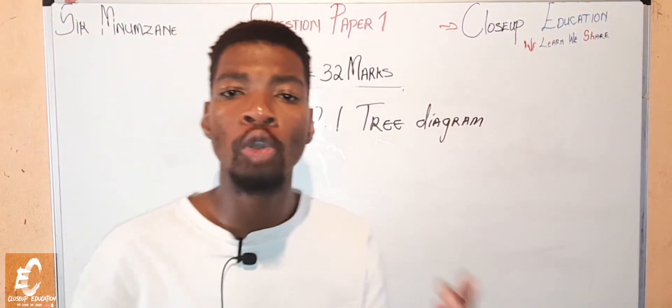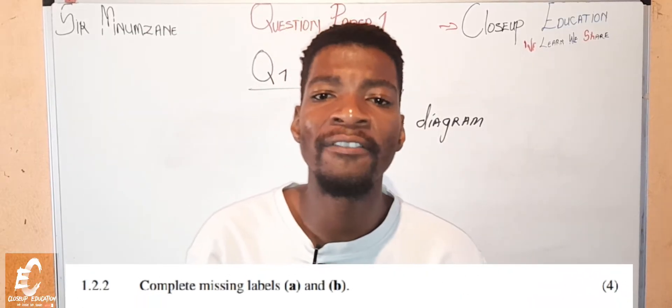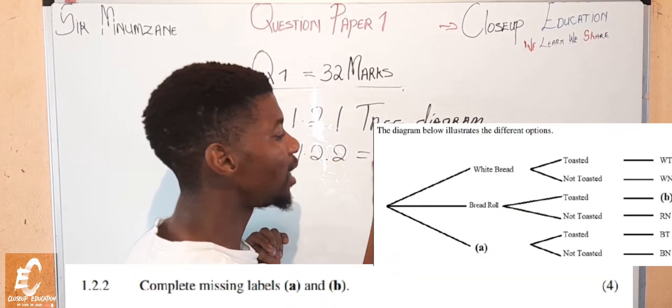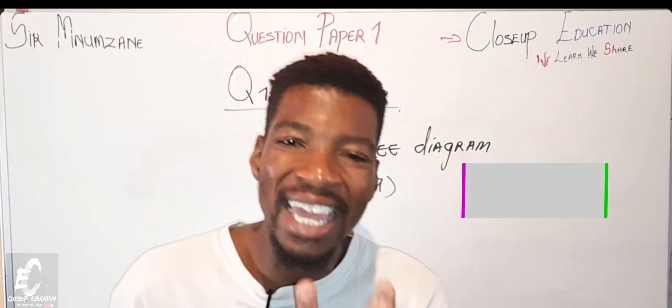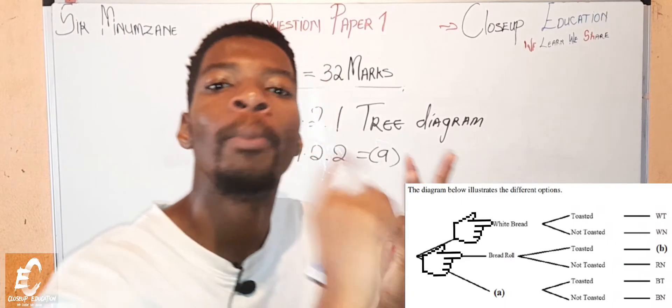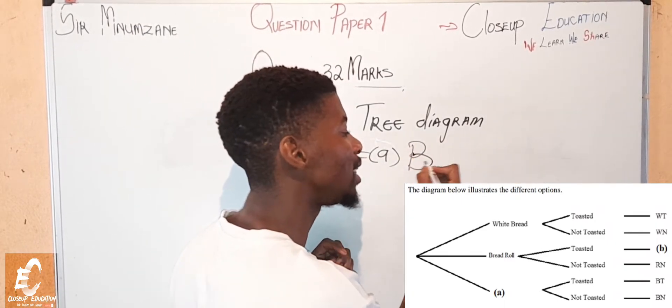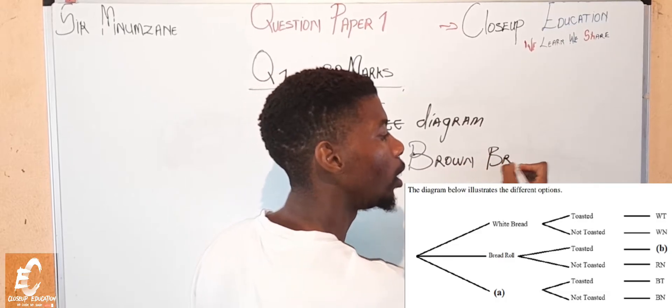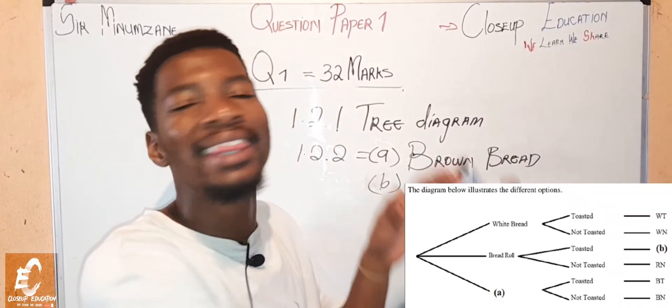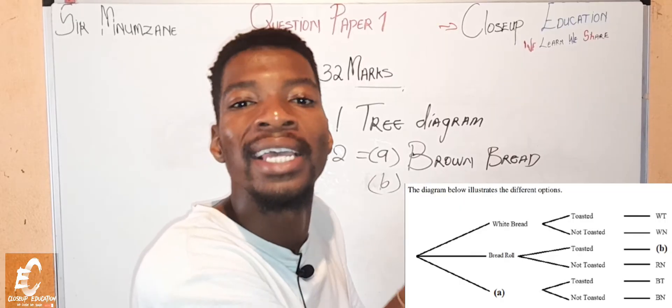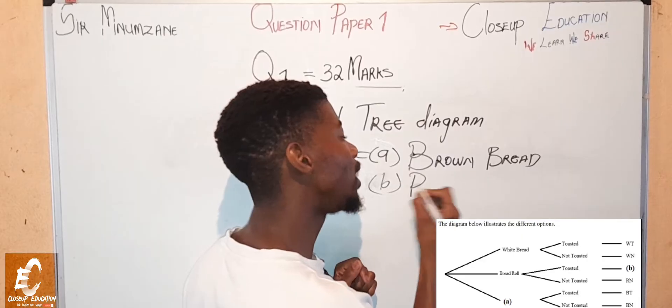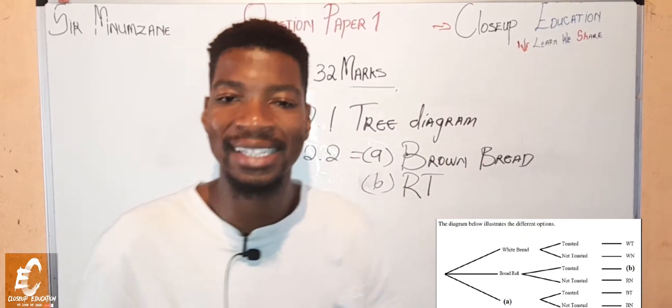Question 1.2.2, easy answer: determine the missing value of letter A and letter B. What is the missing value? 1.2.2, it is A. We know that there are three bread and bread rolls to choose from. We were given the white and the bread roll, meaning the brown bread is the one left to be written down. What about B? As for B, we know that it is between the bread rolls and the choice is that bread roll has to be toasted. So that is our toasted bread roll, yes, RT.